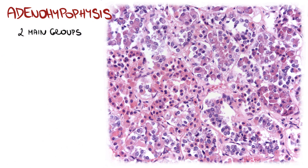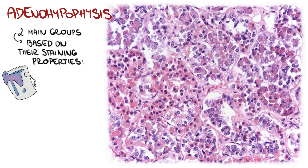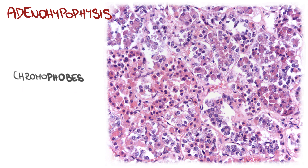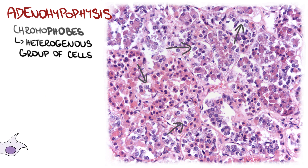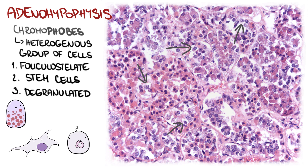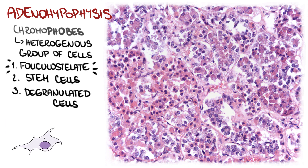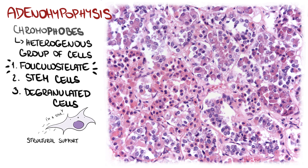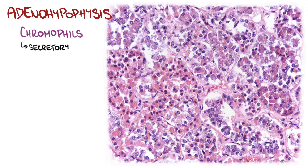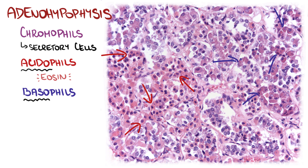There are two main groups of epithelial cells in pars distalis, and the division is based on their staining properties. The ones that stain weakly are called chromophobes, and the ones that absorb the dye readily are called chromophils. Chromophobes represent a heterogeneous group including folliculostellate cells, stem cells, as well as degranulated cells which have already released all their secretory granules. Folliculostellate cells are the most numerous representatives of chromophobes and form a network providing structural support to hormone-secreting cells. Chromophils are secretory cells subdivided into acidophils, stained by acidic dyes such as eosin, and basophils, stained by basic dyes such as hematoxylin.